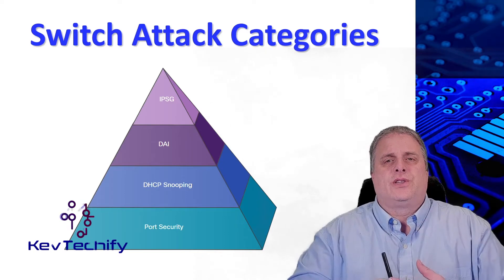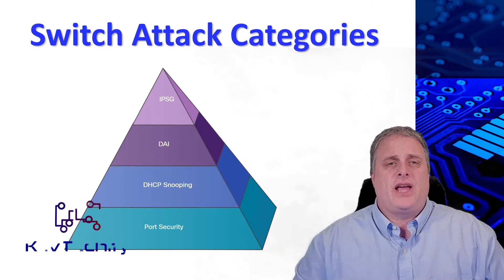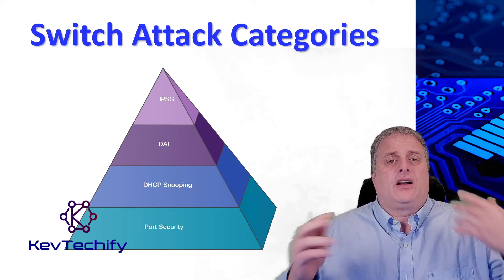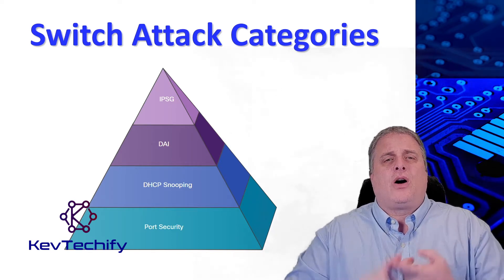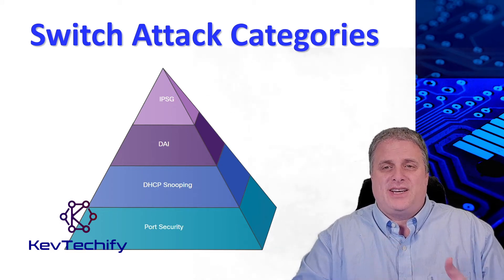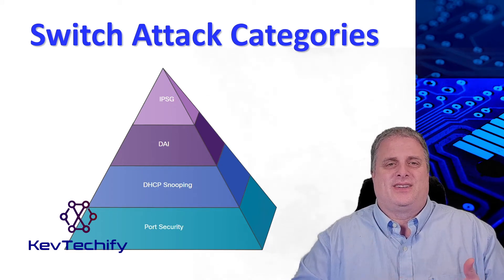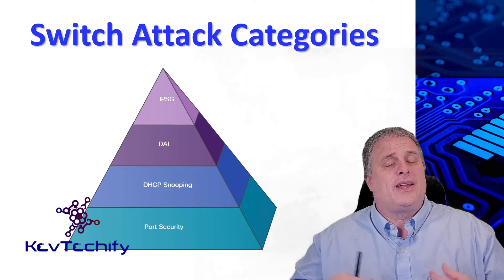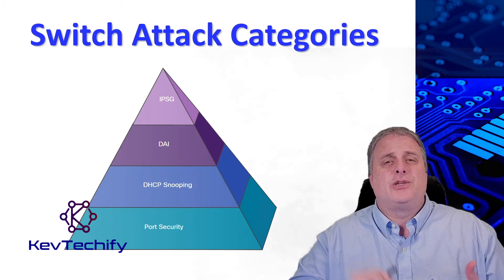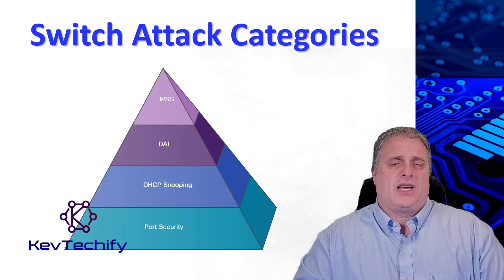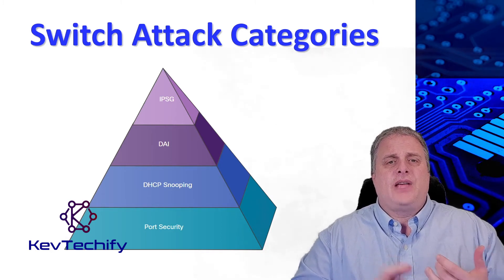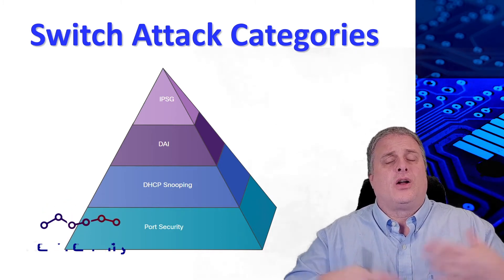Here's an overview of Cisco solutions that help mitigate Layer 2 attacks. There are some recommended strategies. First, always use secure variants of protocols such as SSH, SCP, and SSL. Second, consider using out-of-band management. Third, use a dedicated management VLAN where nothing but managed traffic resides. And fourth, use ACLs to filter out unwanted traffic.